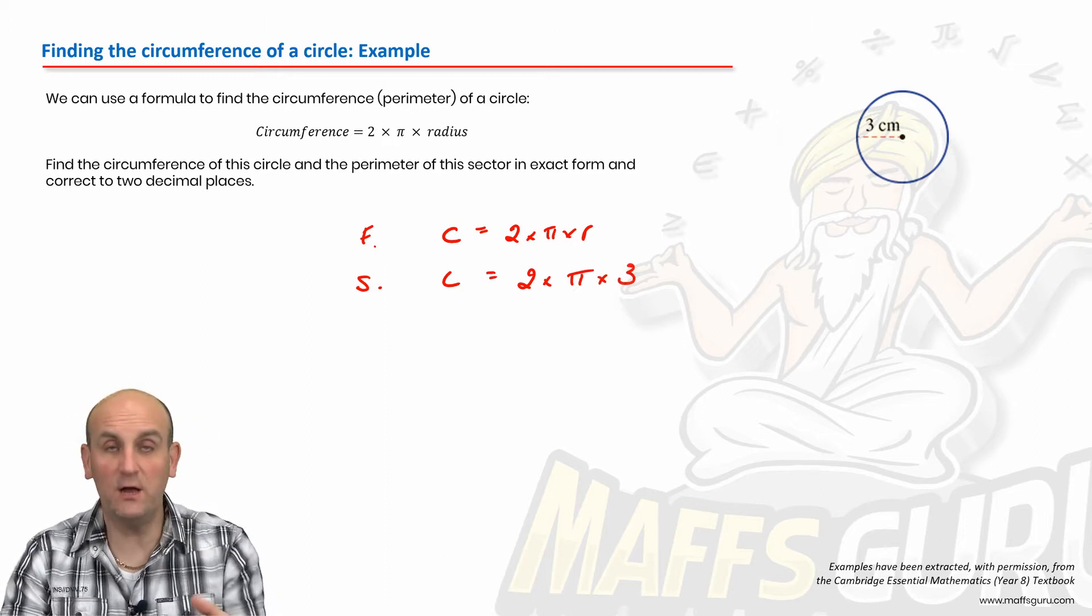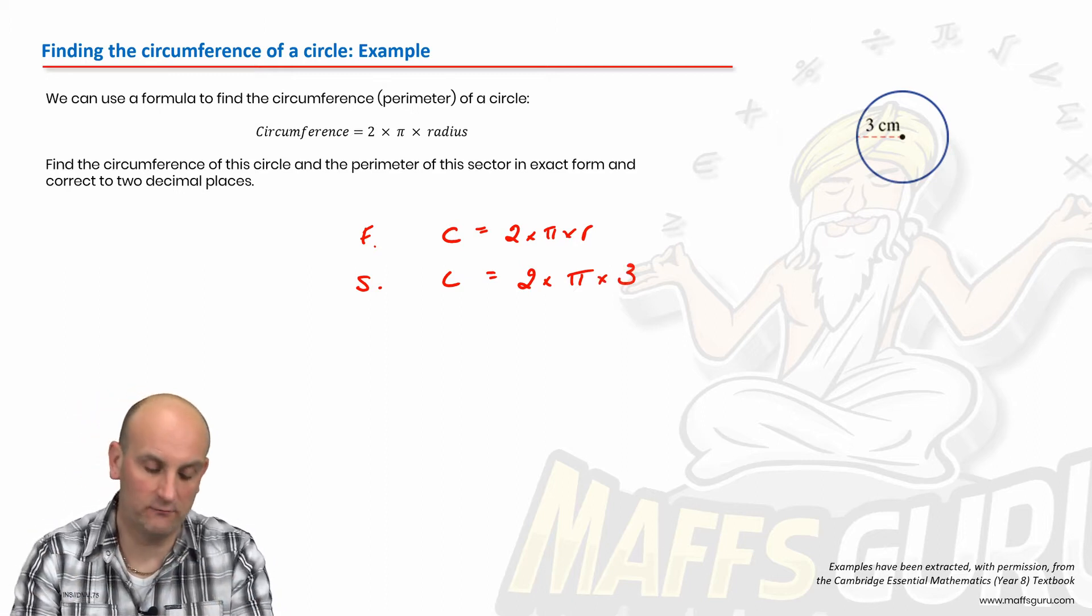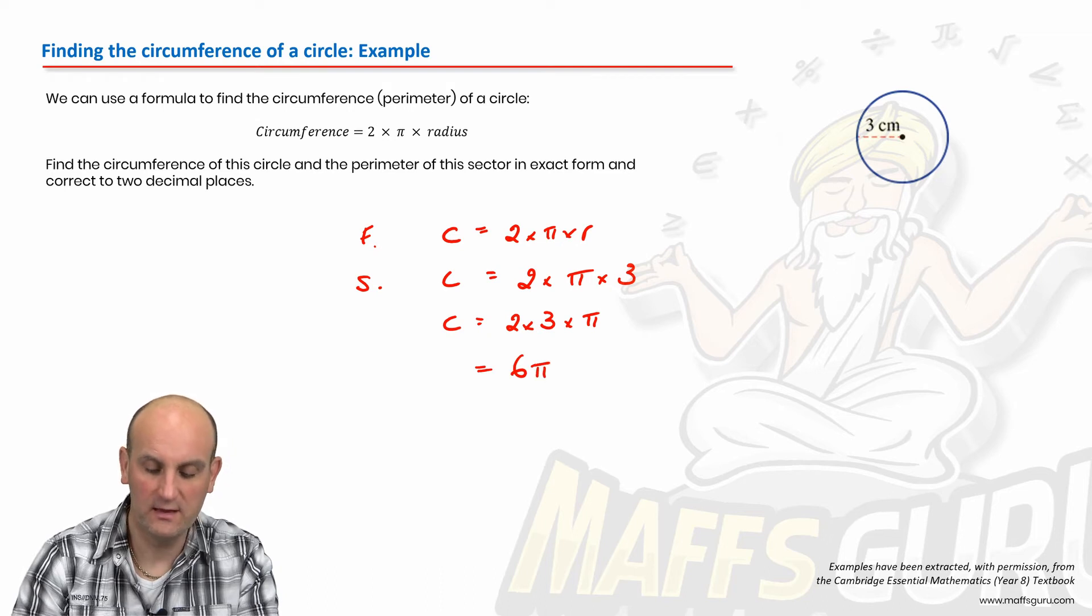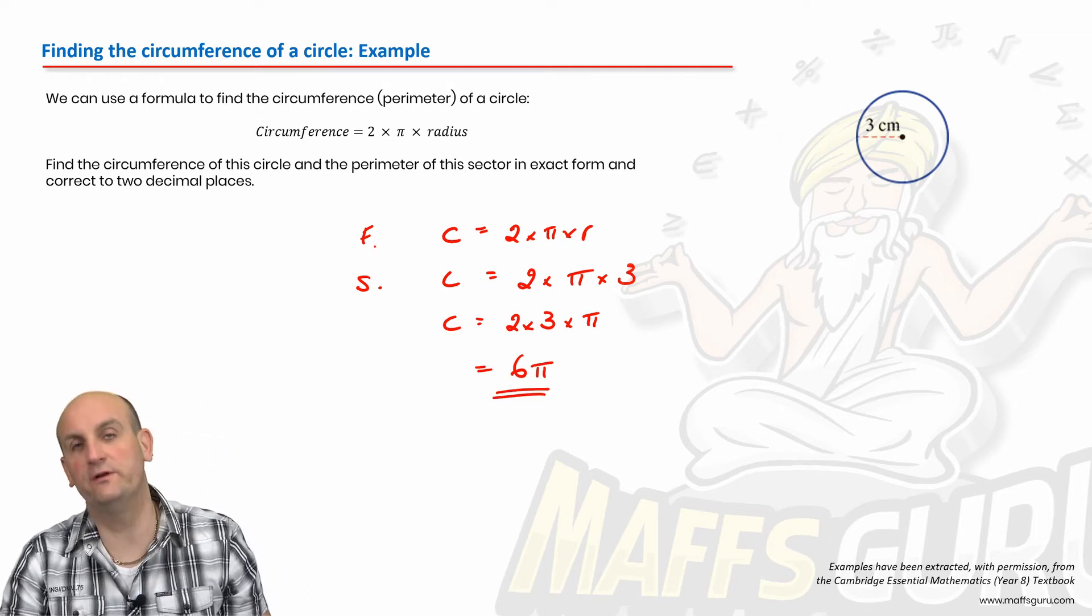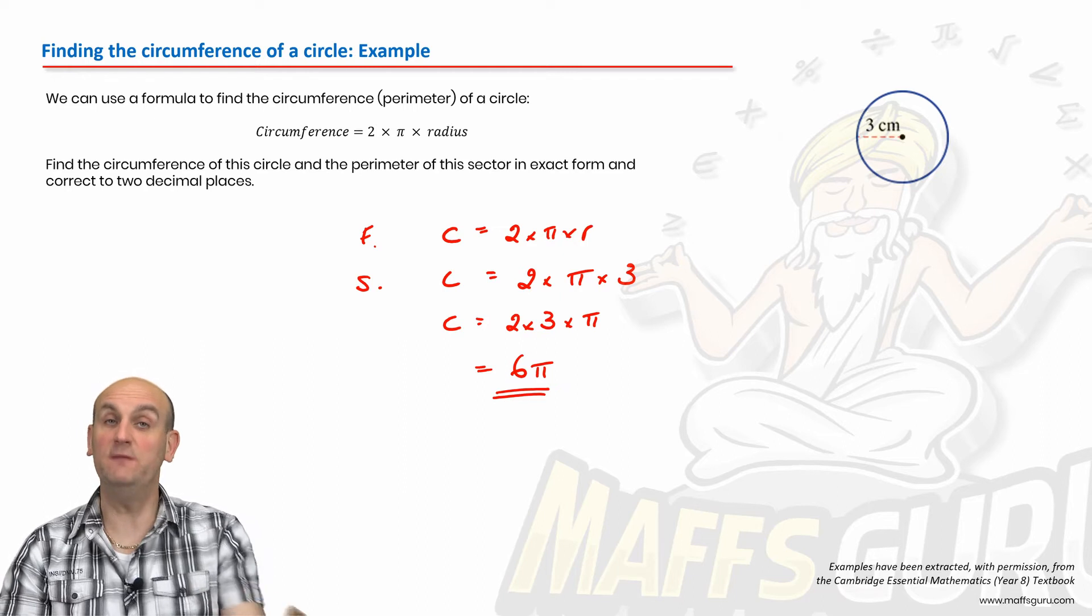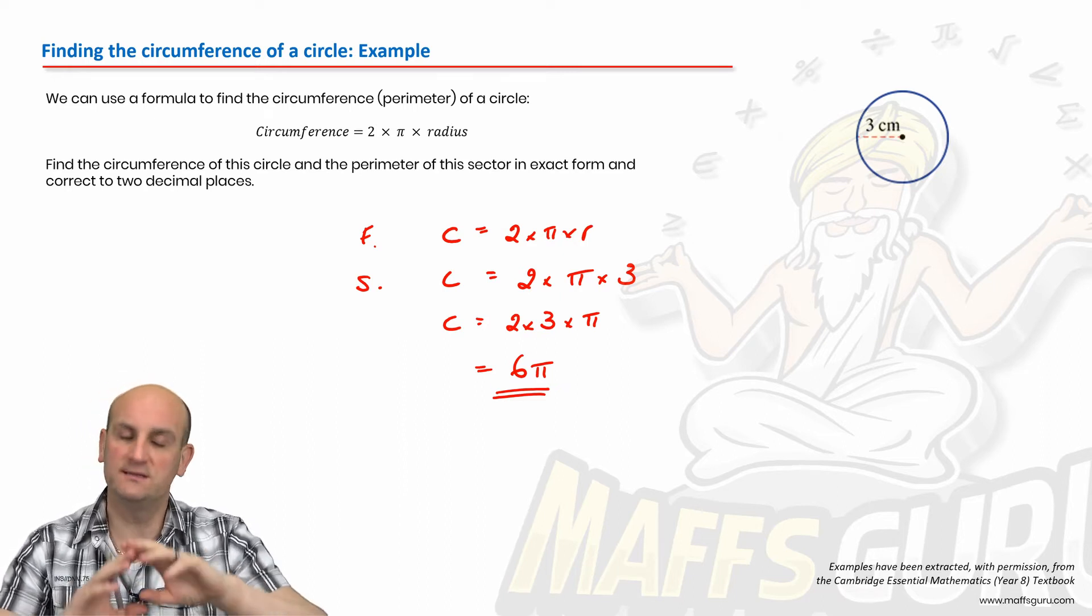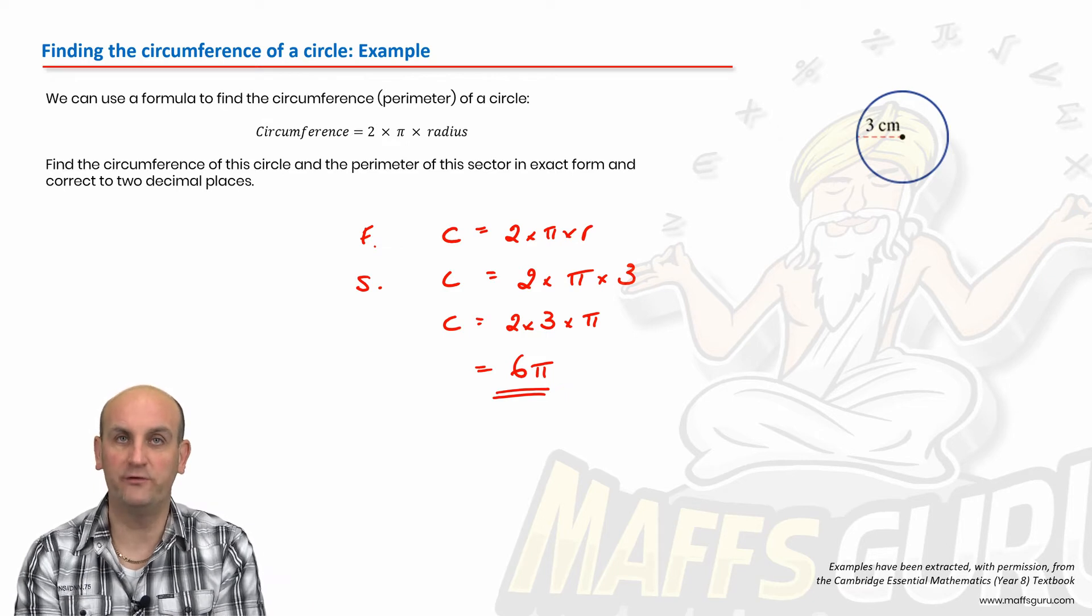So circumference is equal to two times pi times three. Now, because I know I can rewrite this, they're all kissing together and I can write that as two times three times pi. And I know that two times three is six. And so we can write our circumference as six pi.